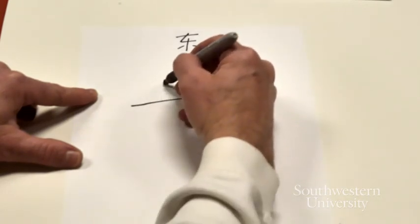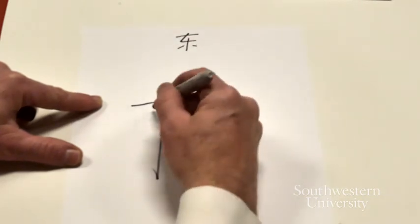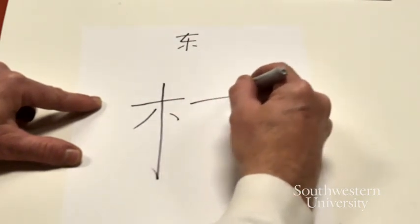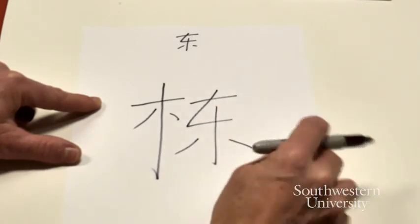Mu, tree or wood on the left, for obvious reasons. Heng, shu, go, pie, dian, heng, shu, zhe, shu, go, pie, dian, dong.